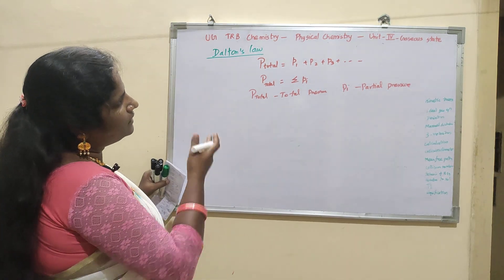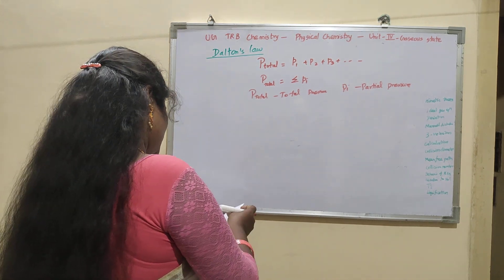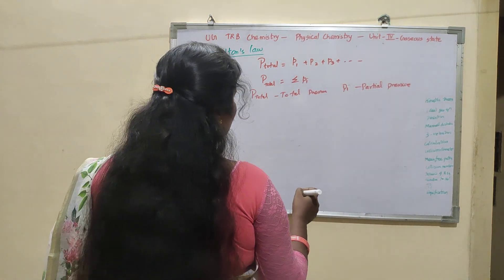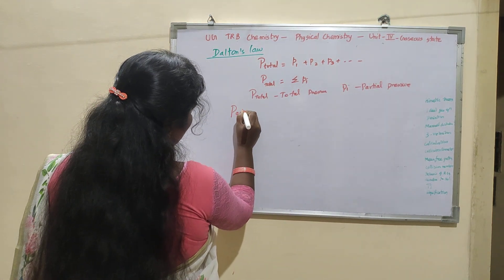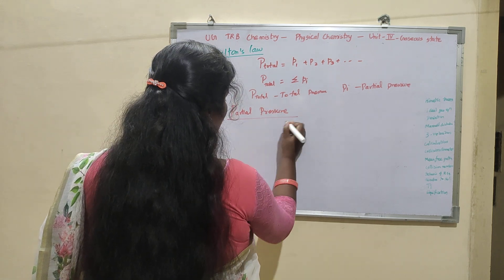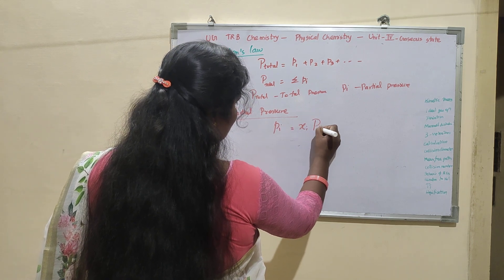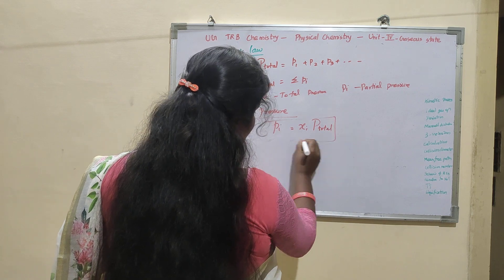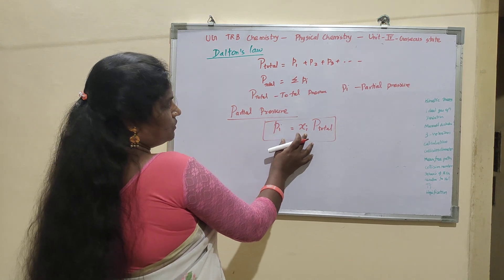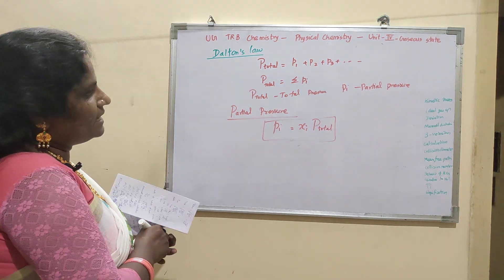Now, suppose we have to know the partial pressure when we know the total pressure. How do we calculate the partial pressure? Partial pressure Pi is equal to Xi into capital P total, where Xi is the mole fraction of the gas. If we calculate the mole fraction into P total, we can calculate the partial pressure of the corresponding gases.